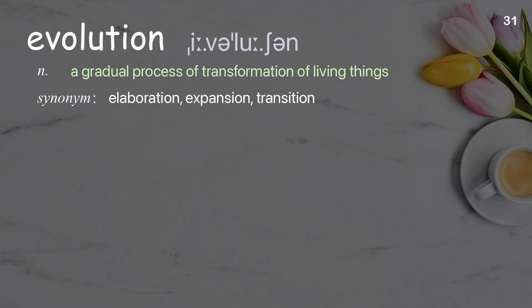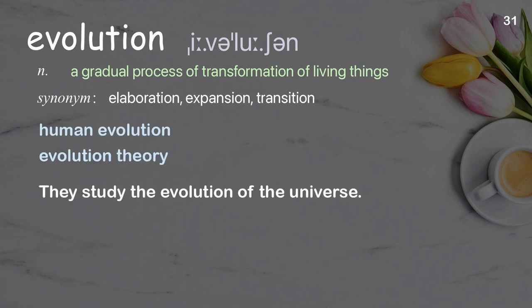Evolution: A gradual process of transformation of living things. Examples: Human evolution. Evolution theory. They study the evolution of the universe.